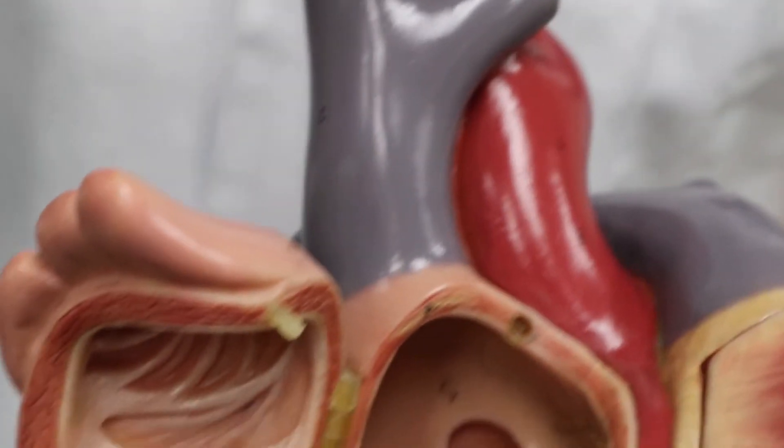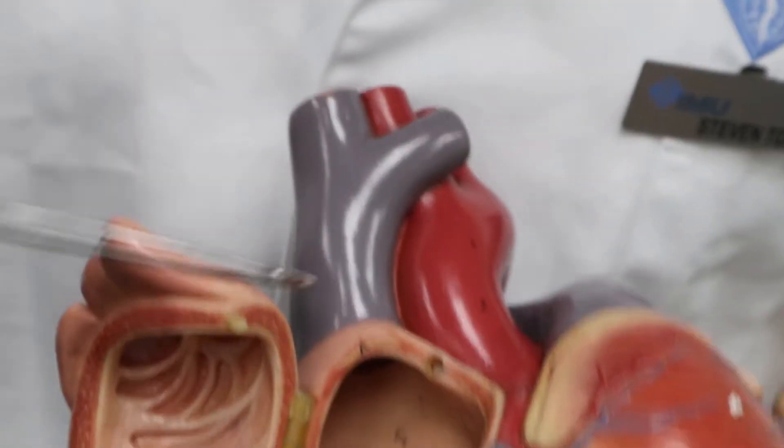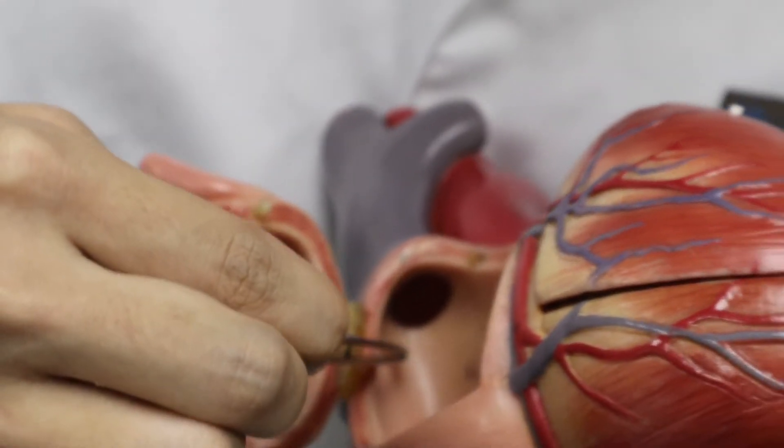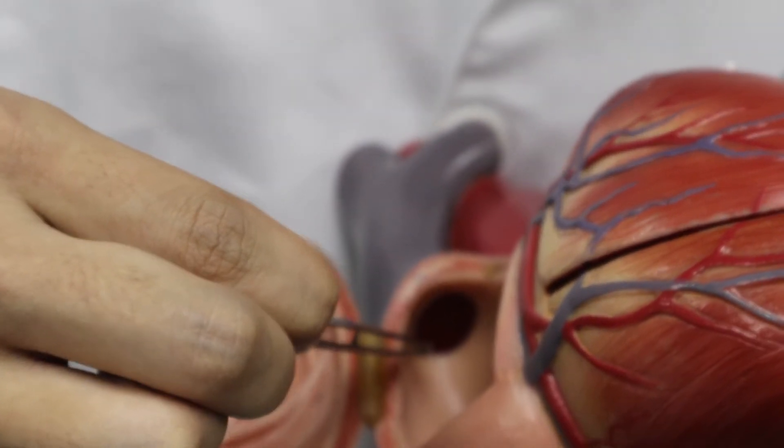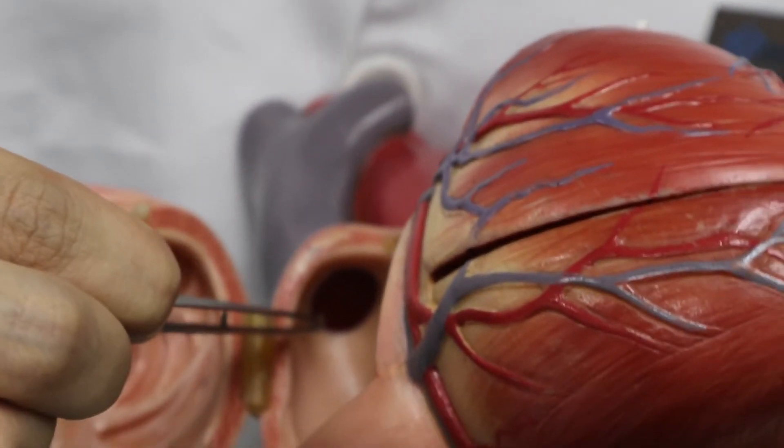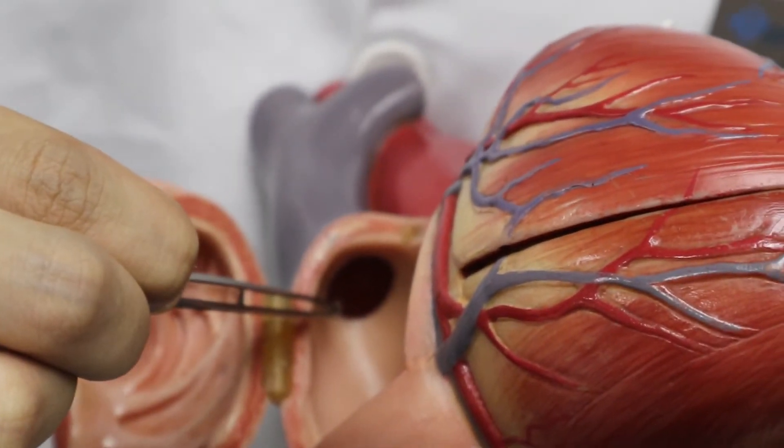Over here, you can see the superior vena cava joining into the right atrium at this rounded edge. At the right border of this rounded edge contains the sinoatrial node, also known as the pacemaker of the heart.